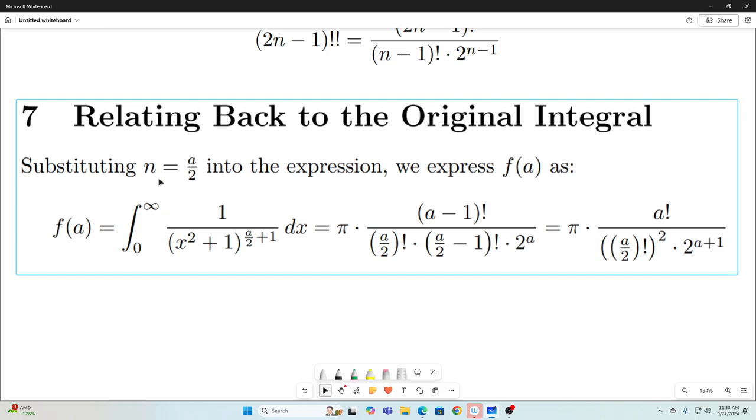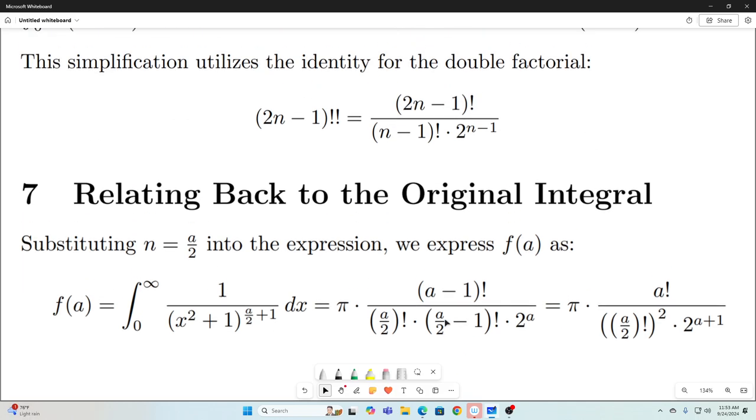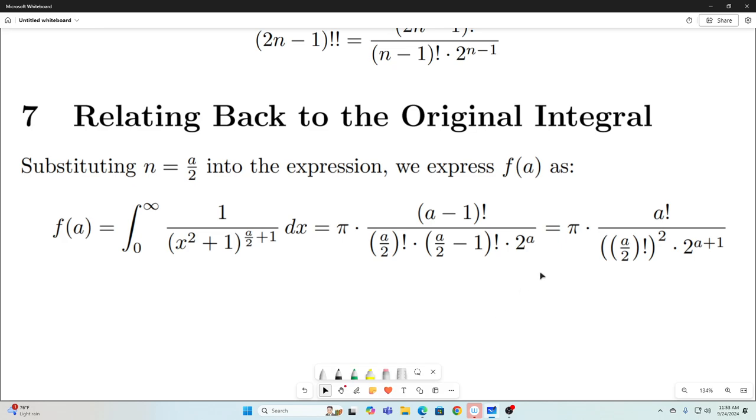So we substitute n equals a divided by 2 into the expression. And we get f of a. Don't forget f of a was this thing. Now that's going to be equivalent to this thing evaluated at n equals a over 2. And that transformed just like this.